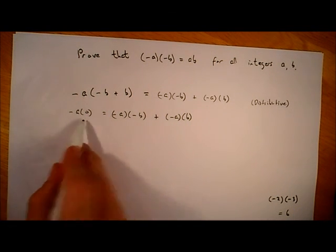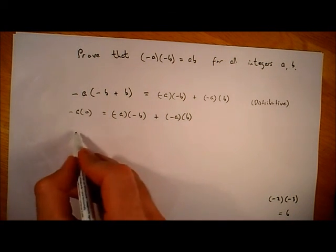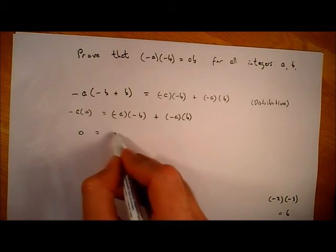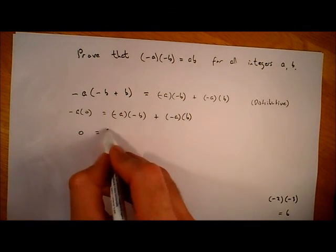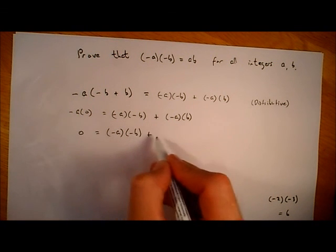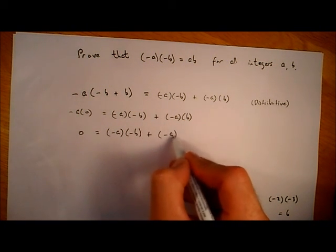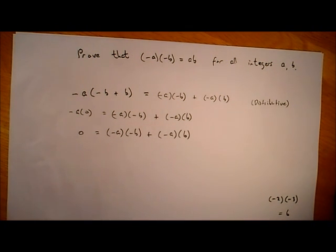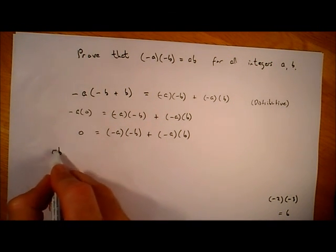So the left-hand side here is zero. So we've got zero is equal to all of this, so minus a by minus b plus minus a by b. So now, let's just add ab to both sides. So we're going to add a times b.